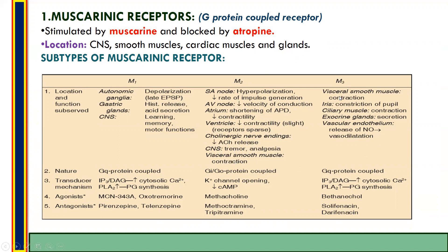M3 is located on visceral smooth muscle, where it causes contraction. On the iris it causes constriction of the pupil, reducing pupil size. On the ciliary muscle it causes contraction. On exocrine glands it causes secretion. On vascular endothelium it causes release of nitric oxide, leading to vasodilation.